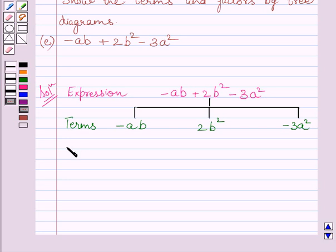Now, we will find factors of these terms. Factors of term minus AB are minus 1, A, and B. We know minus AB is the product of minus 1, A, and B. So, its factors are minus 1, A, and B.